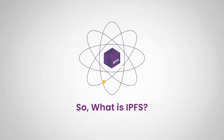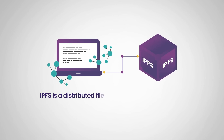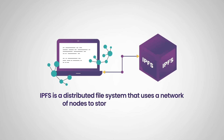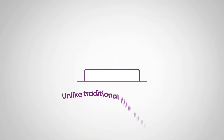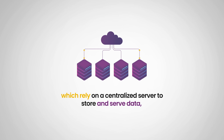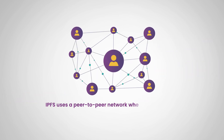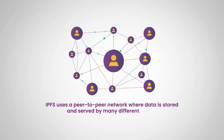So what is IPFS? IPFS is a distributed file system that uses a network of nodes to store and access data. Unlike traditional file systems, which rely on a centralized server to store and serve data, IPFS uses a peer-to-peer network where data is stored and served by many different nodes.